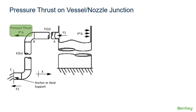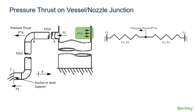P is the internal design or operating pressure of the vessel and piping, and A is the inside pipe area of the nozzle. This pressure thrust of concern acts on the upstream elbow in an outward radial direction from the vessel nozzle. The balancing force acts on the vessel wall opposite to the nozzle, as shown in this figure.